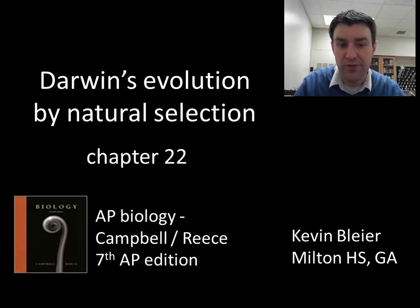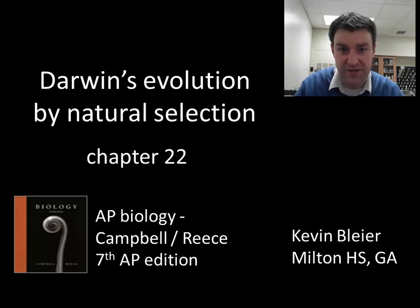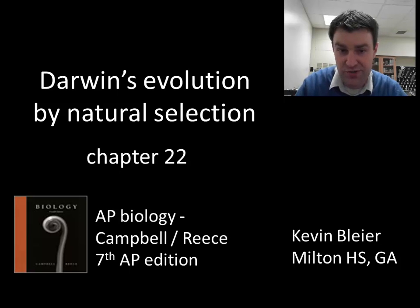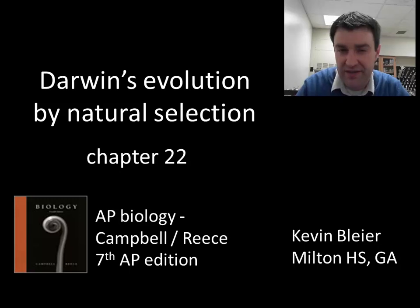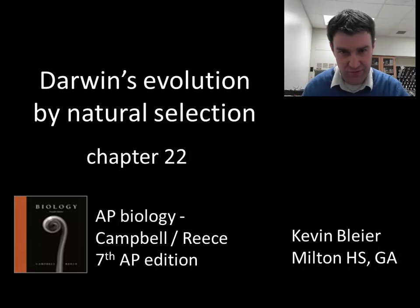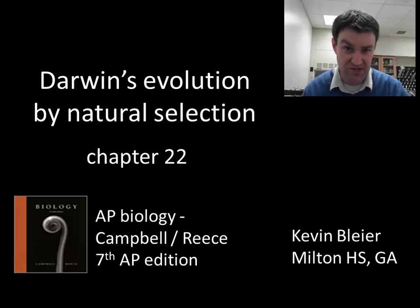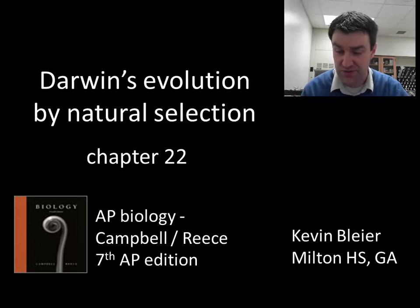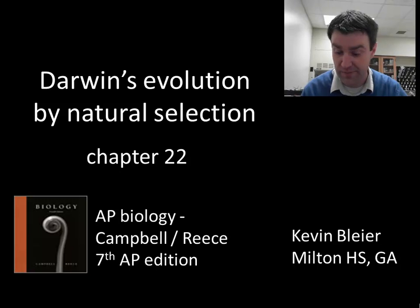In this video we're going to walk through Darwin's evolution by natural selection, one of the causes of evolution. The terms are not exactly the same. Evolution is any time a population changes over generations. Natural selection is one of the causes of evolution. We will soon see in chapter 23 that there are other causes as well.